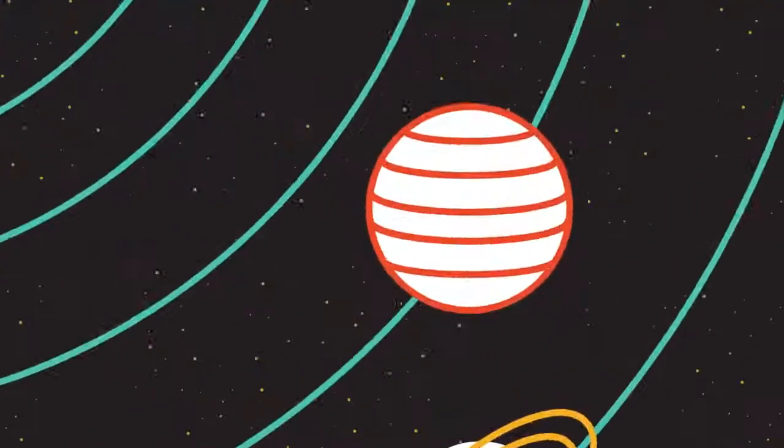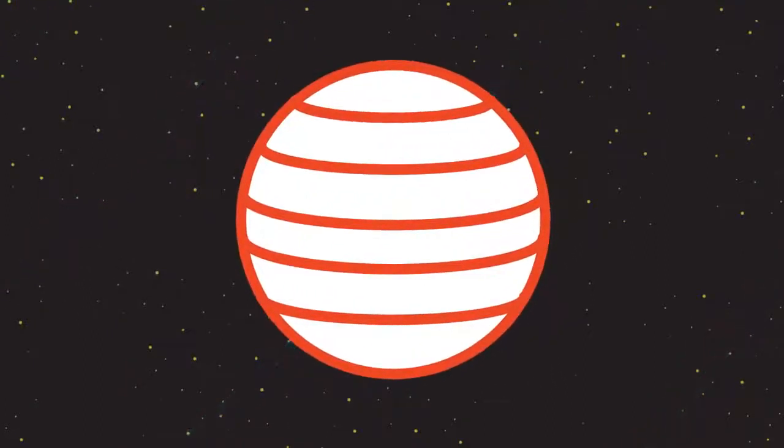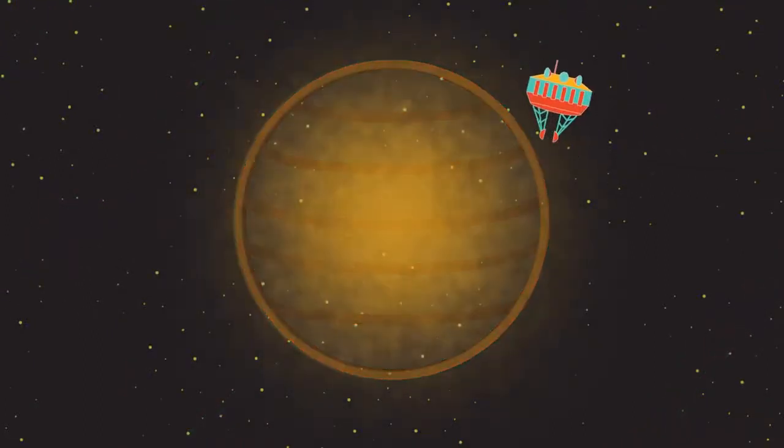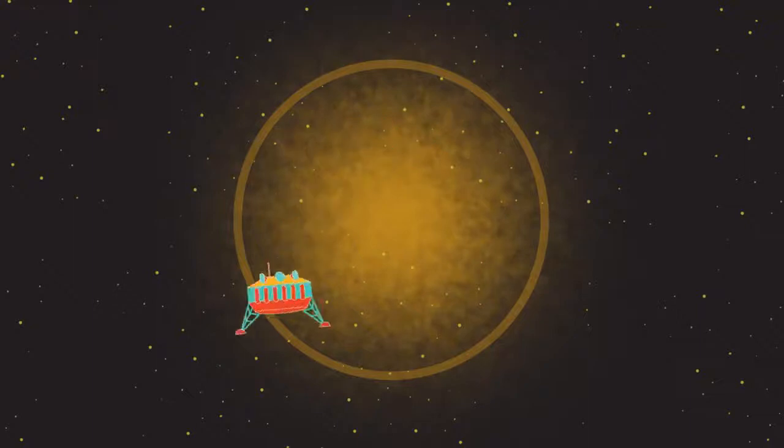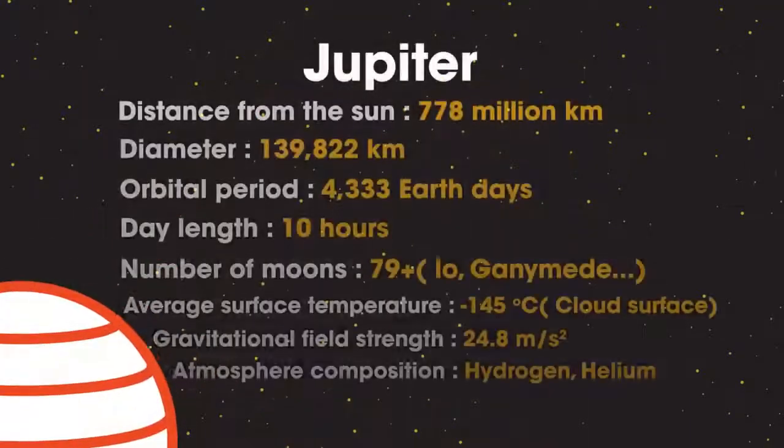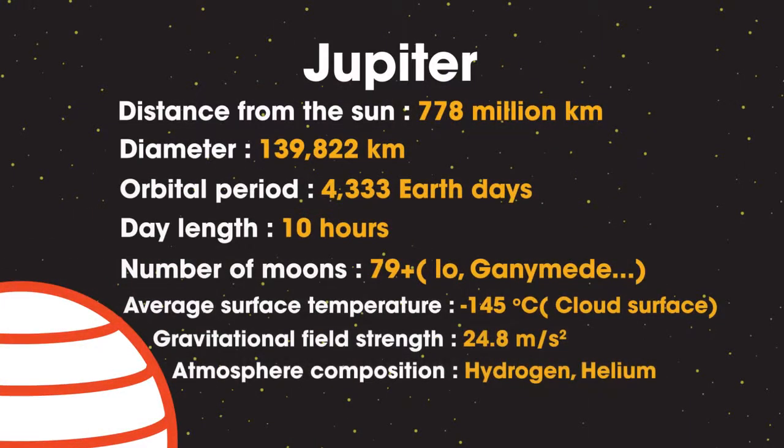The common feature of the outer planets is that they are all gas giants. They have no solid surface. What we observe is a ball of gas or vapor so we cannot land on them. There is a lot to take in so you may want to pause the video to have a good read.